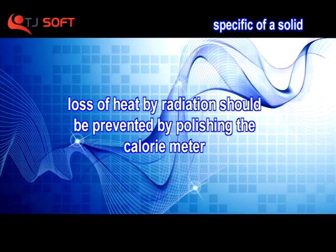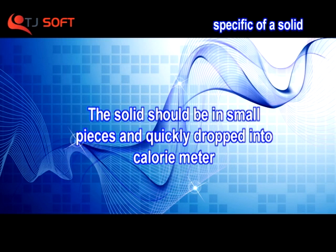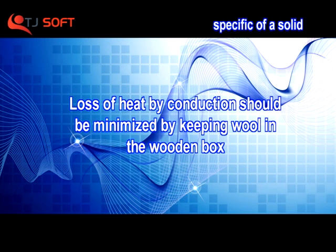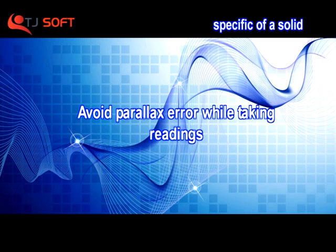Precautions: Loss of heat by radiation should be prevented by polishing the calorimeter. The thermometer should be removed with least loss of water. The solid should be in small pieces and quickly dropped into the calorimeter. Loss of heat by conduction should be minimized by keeping wool in the wooden box. The water level in the calorimeter must be sufficient to immerse the solid pieces completely. Avoid parallax error while taking readings.